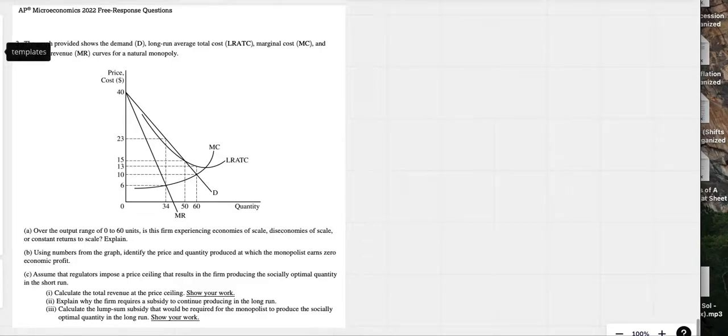2022 Micro question number three, this is set two by the way. The graph provided shows the demand, long run average total cost, marginal cost, and marginal revenue for a natural monopoly over the output range of zero to 60.